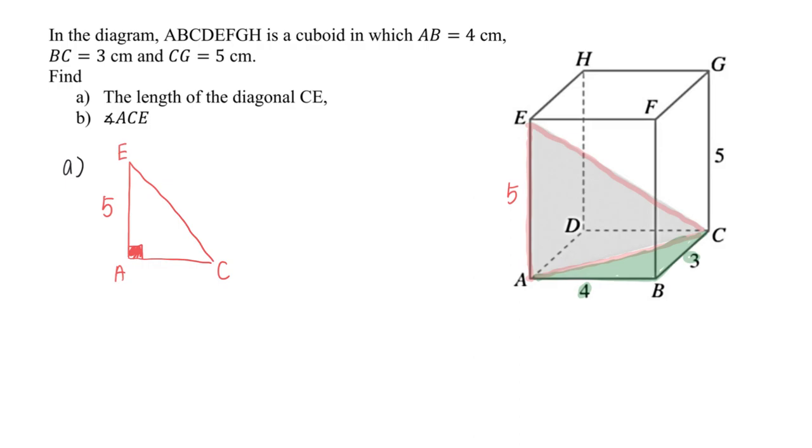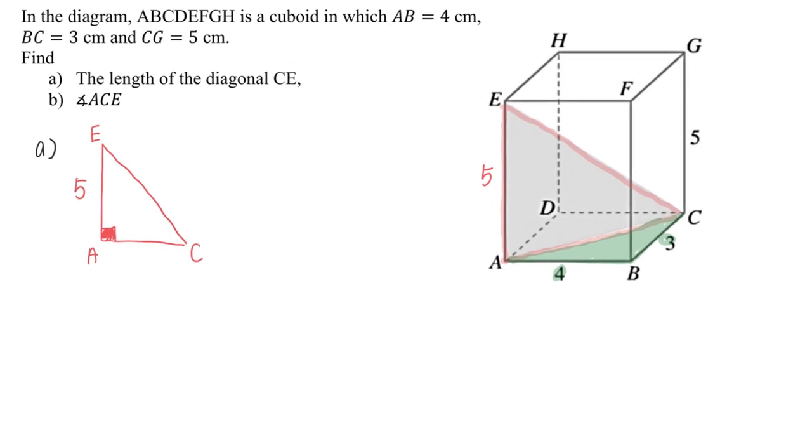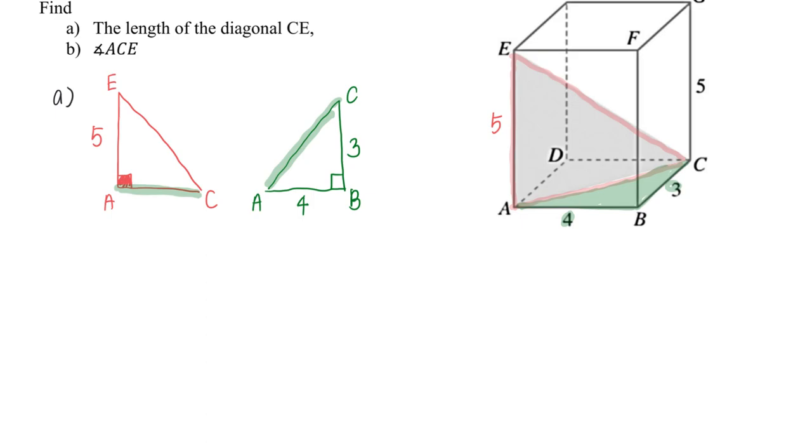The next part involves looking at triangle ABC, which I'm going to sketch out. This side is 4 and this is 3, and from here I can use this to find AC.